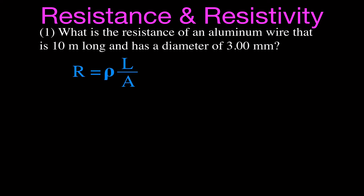We have some example problems for resistance and resistivity — very basic. The first one says: what is the resistance of an aluminum wire that is 10 meters long and has a diameter of 3 millimeters? This is the equation we use to calculate the resistance.